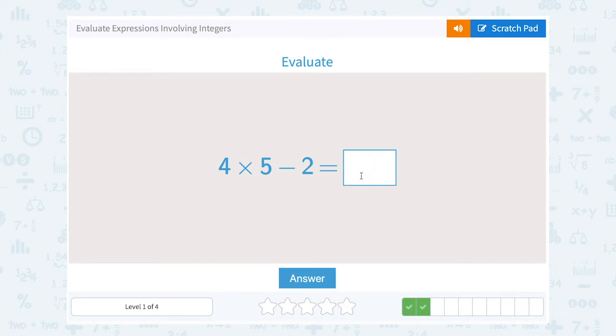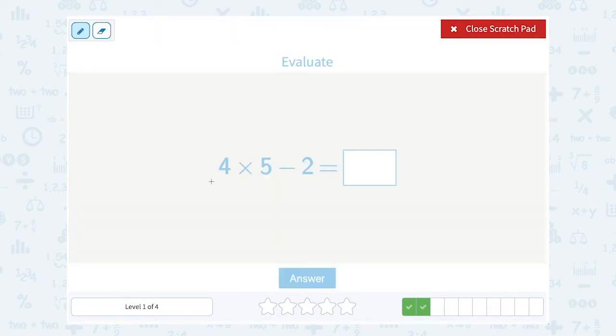4 times 5 minus 2. Well, much like the last problem, we have to think about order of operations, and remember that we need to multiply first before we subtract.